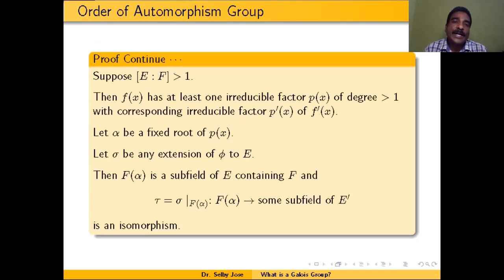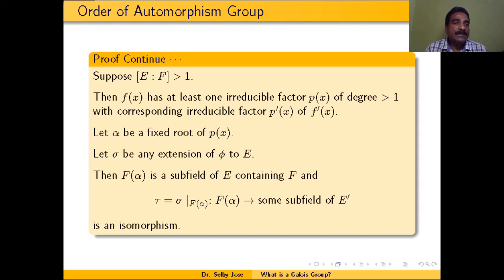We assume the result holds for any extension K over L with degree [K:L] strictly less than [E:F], and assume [E:F] is greater than 1. Because E is the splitting field of f(x) and f(x) does not split completely over F, [E:F] > 1. Therefore, f(x) has at least one irreducible factor P(x) of degree greater than 1. Let P'(x) = φ(P(x)), so P'(x) is the corresponding irreducible factor of f'(x).